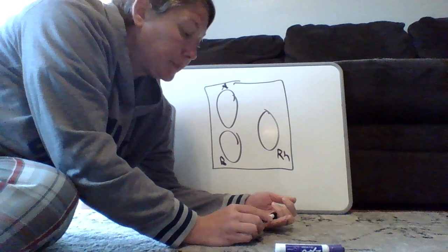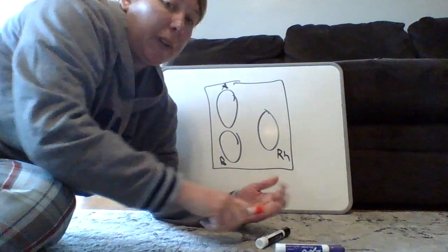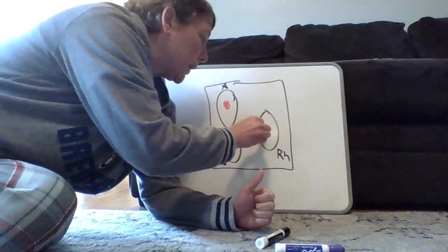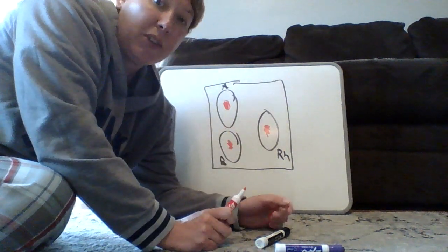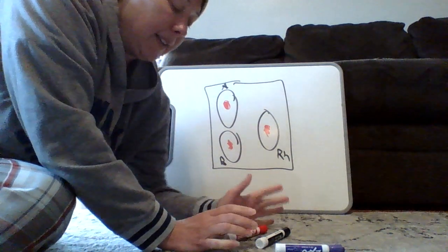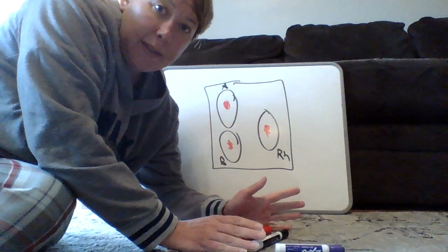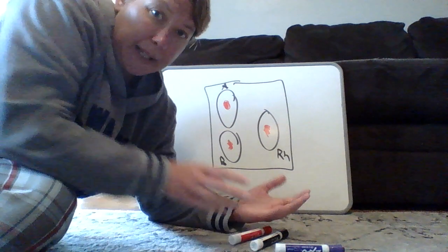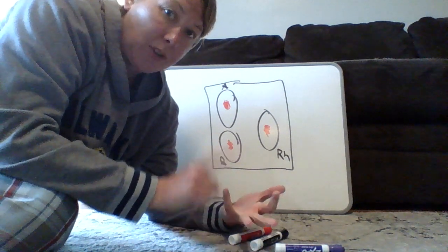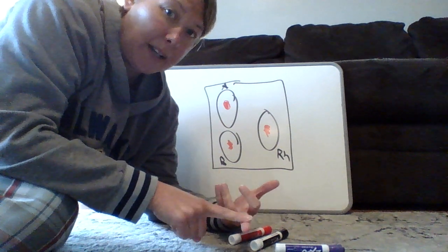So we're going to take a sample of somebody's blood and we're going to put a couple drops of blood in each one of the wells. So that is the patient's blood. So that would be like my blood. What we want to do then is there are three different antibodies that we can have. We can have antibodies to the A antigen. We can have antibodies to the B antigen and we can have antibodies to the RH antigen.